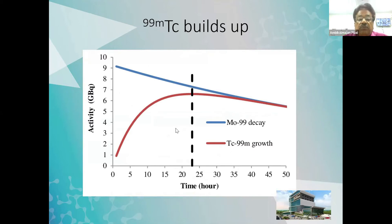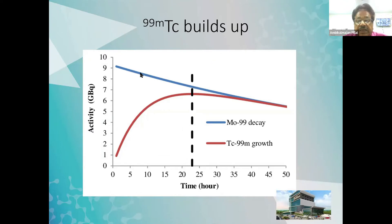If you buy a generator — a one-curie generator — this is how the activity will be reducing. As time passes, the molybdenum activity will keep on reducing. After about 50 hours, that is about two days, it will be only about 50 to 60% of the original activity.